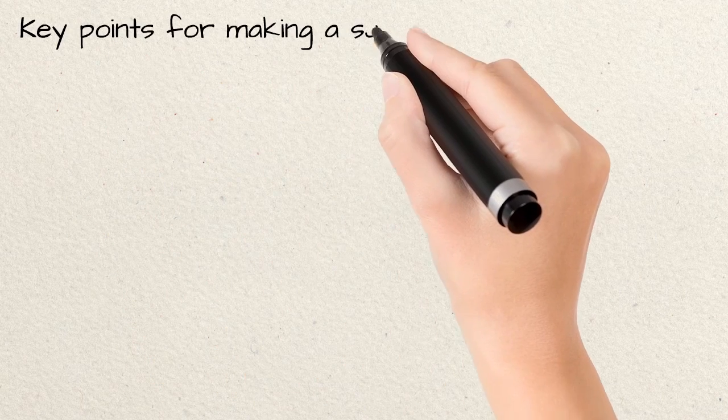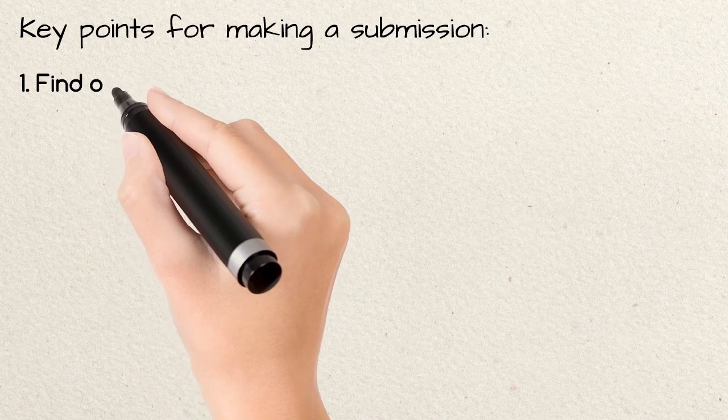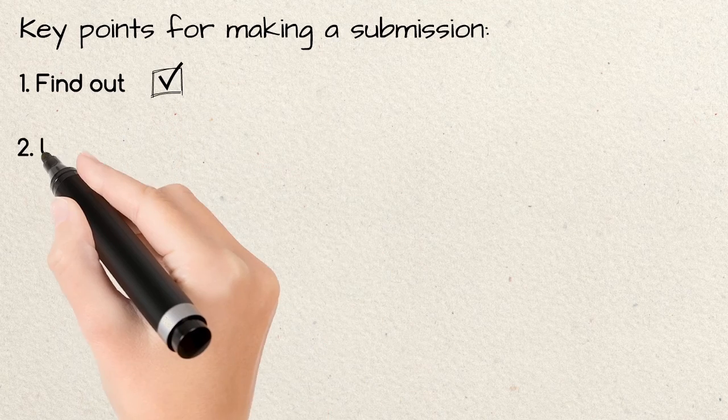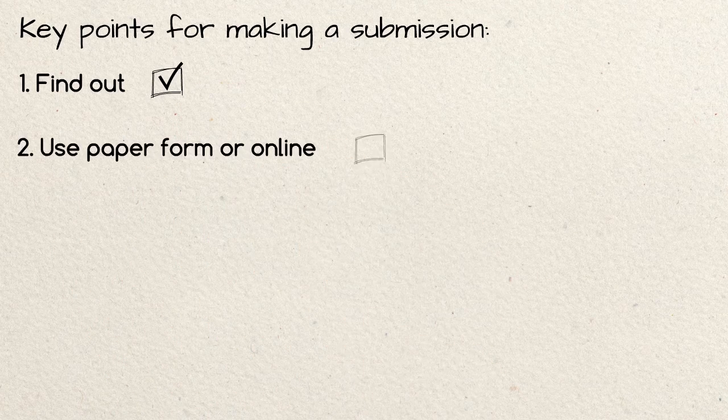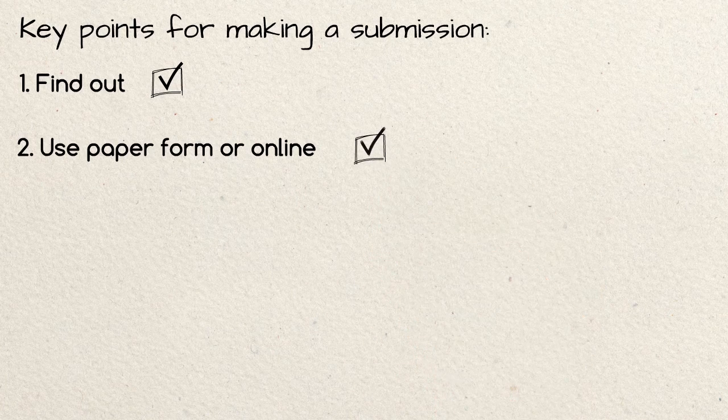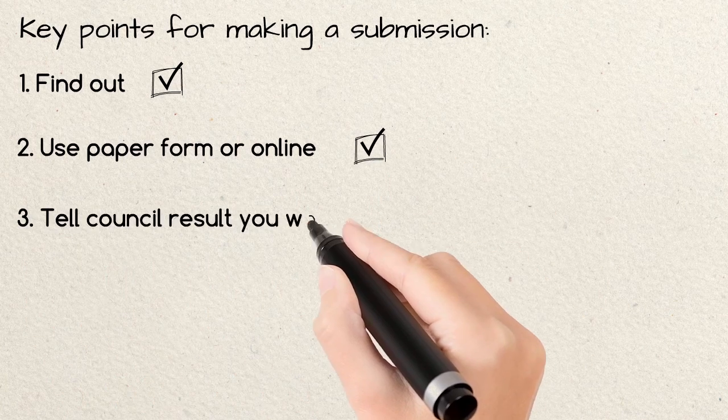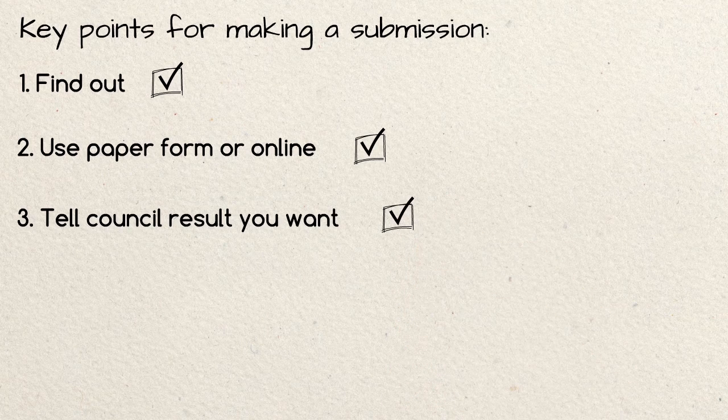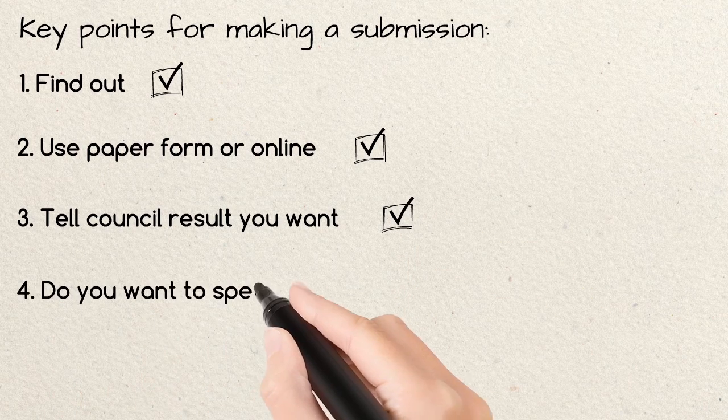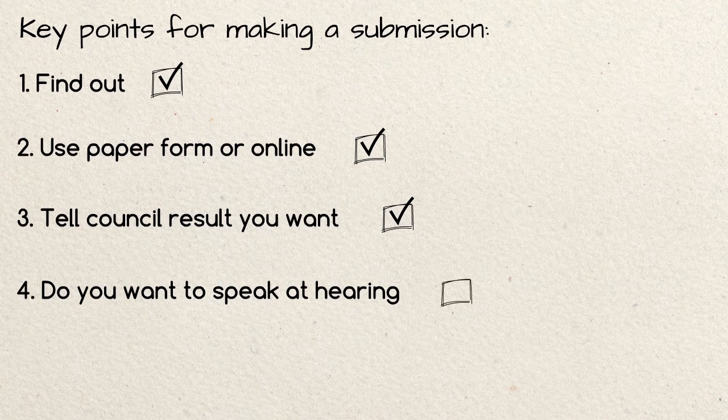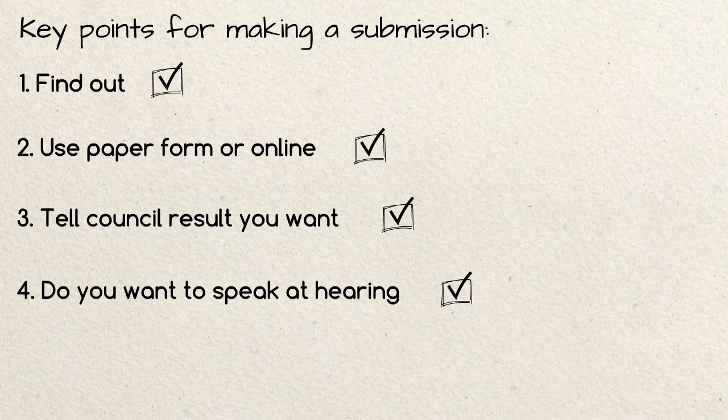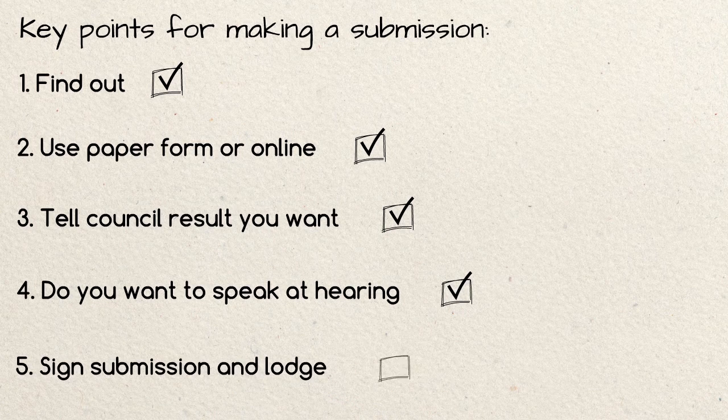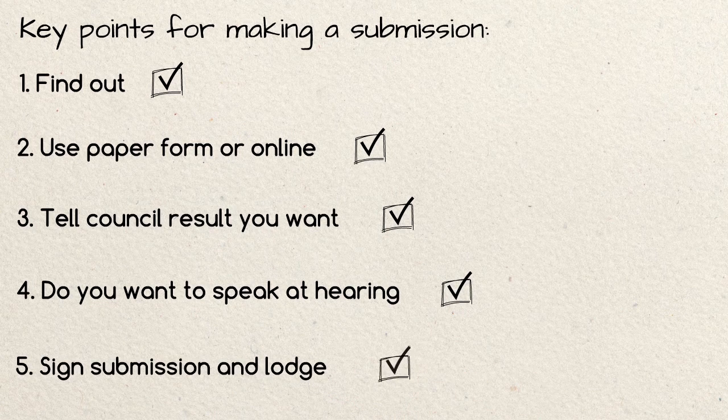Key points for making a submission. Find out about the plan and its impact on you. Use the form provided or lodge your submission online. Provide examples, evidence and tell the Council the outcome you want. Confirm whether you want to speak at the hearing. Sign and date your paper submission form and complete the contact details. Lodge your submission before the closing date.